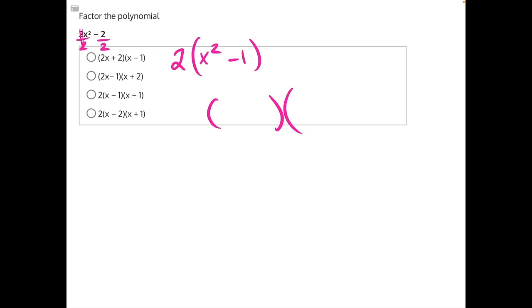We set up our binomials to each have the square of the first number. So x times x gives us x squared, and then the square of the second number, so 1 times 1 gives us 1.